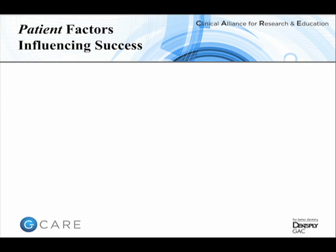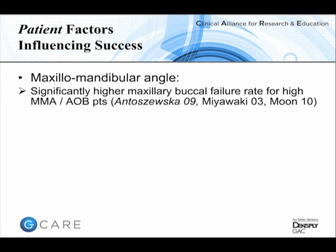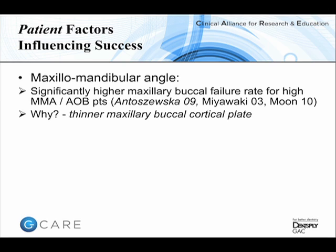In patient terms, reasons for failure include whether the patient has a high or low angle. Several papers have shown that patients with a high maxillomandibular angle or long face have a higher failure rate for buccal insertion sites, apparently because these patients anatomically have a thinner cortical plate on the buccal side of the maxilla. It is slightly ironic that these are also the patients in whom we may wish to insert mini-implants posteriorly to correct an open bite — which is one reason I opt for palatal insertion sites in these cases.